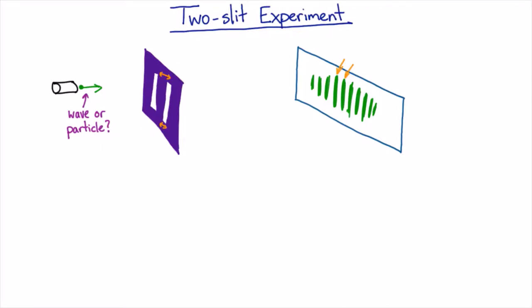Young used sunlight as his source, and he put it through a little pinhole, so we get a nice single point source of sunlight, and then he put it through two other pinholes, and he saw his interference fringes.